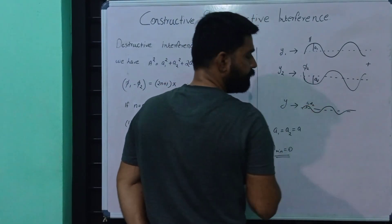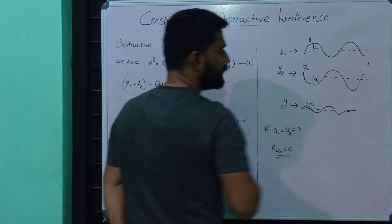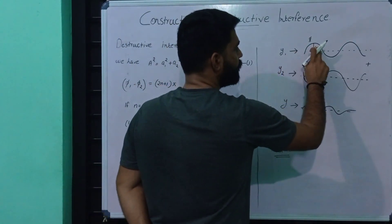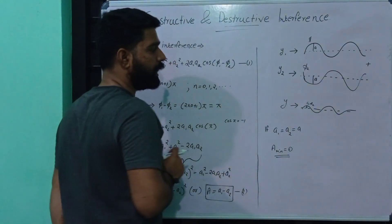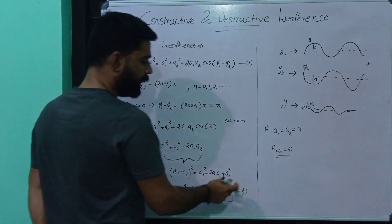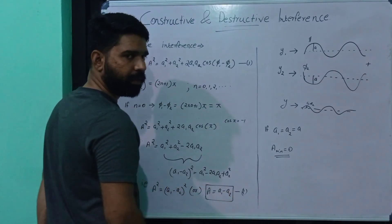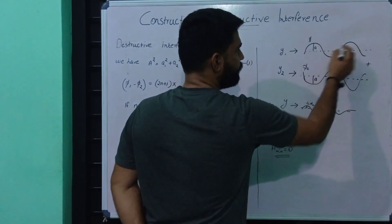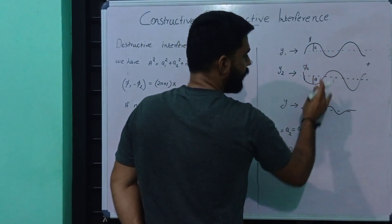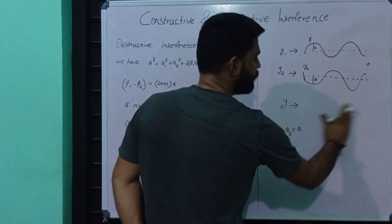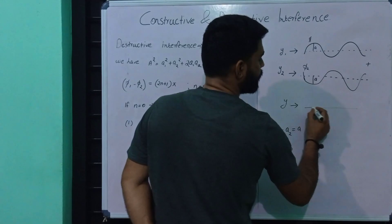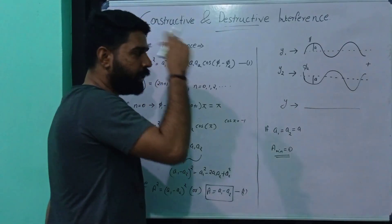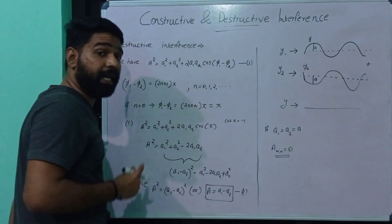The resultant amplitude is a1 minus a2. Now, taking the special condition where a1 equals a2 equals a — that is, both amplitudes are equal — the amplitude of the resultant wave equals zero. This gives us destructive interference.